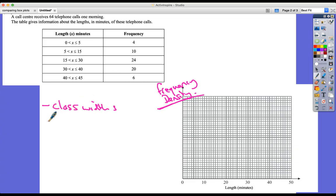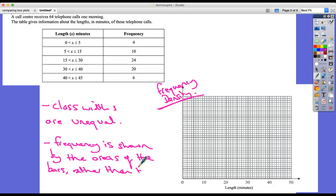Now in a frequency density histogram, this is the key point here: class widths are unequal, which leads us to show the data fairly with fair representation by showing frequency is shown by the area, the areas of the bars rather than their heights. Okay, so what's frequency density? Frequency density is frequency divided by class width.